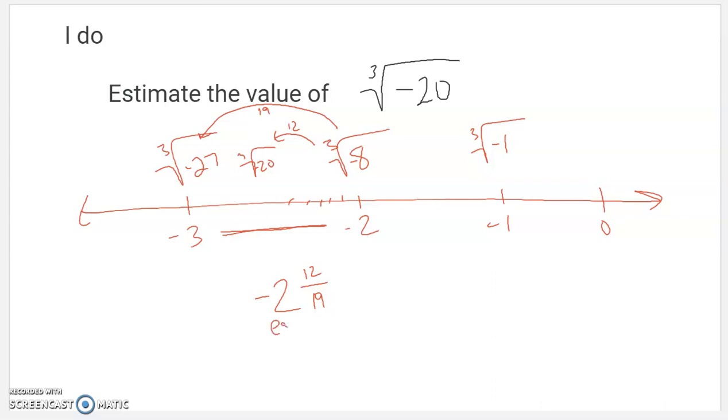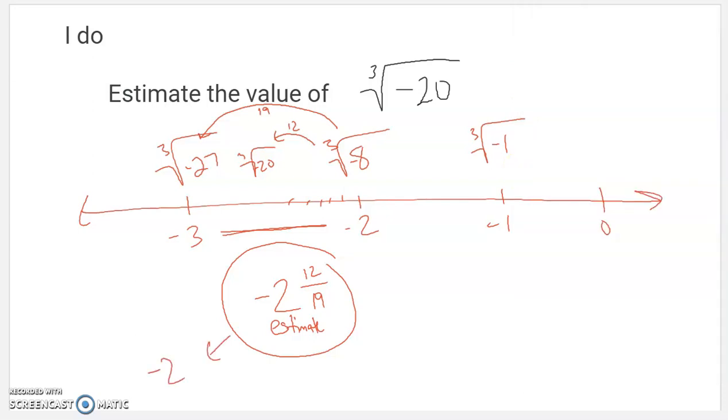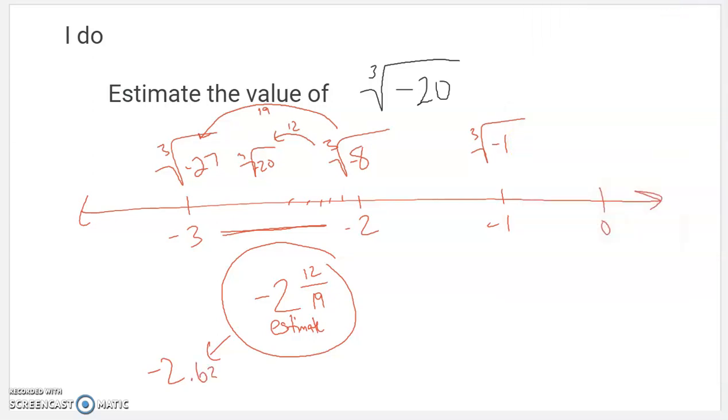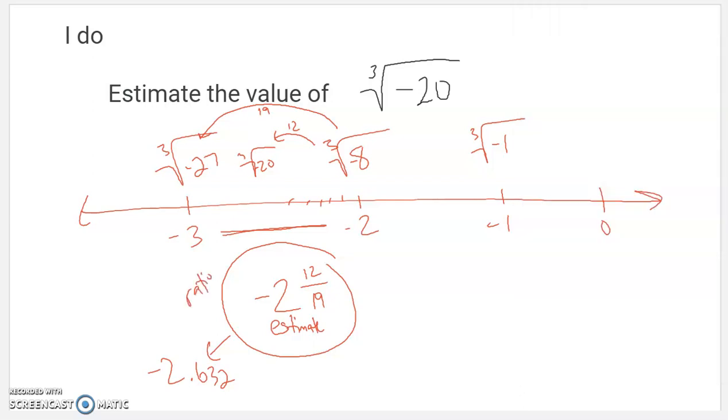And that is a very close estimate. It's real, real close to that. 12/19 is that. So that's like, is close to negative 2 and .63, something like that. My calculator won't do cube roots, but if you check the actual cube root of negative 20, it's going to be really, really, really close to this. So this is a rational estimate that is even more precise than we were able to do yesterday.